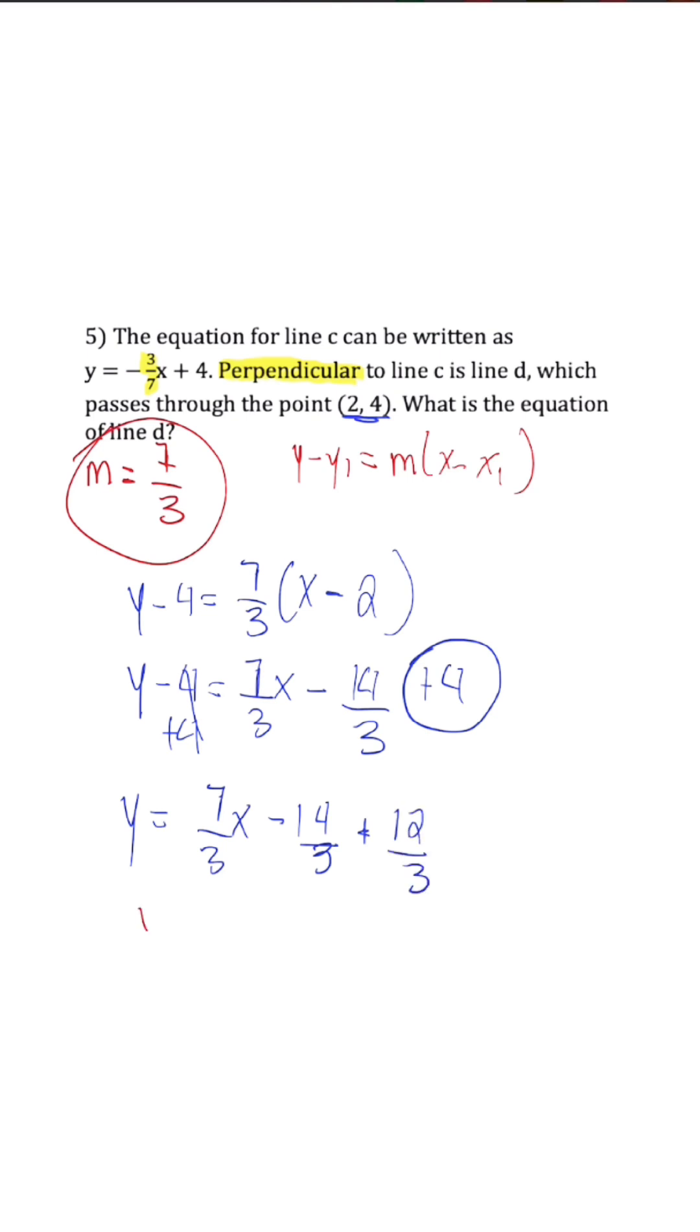So now once we combine our like terms, our final answer is going to be y is equal to seven over three x minus two over three. And this is going to be the equation of the perpendicular line that passes through the point (2, 4).